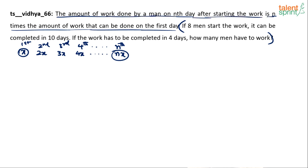So they're working in a different style. Usually we say the work done by each man every day is the same — x, x, x and so on — unless the capacity doubles or halves or changes in some fashion. But here it is increasing: it's n times the capacity on the first day. So on the hundredth day he will do 100 times the work done on the first day.